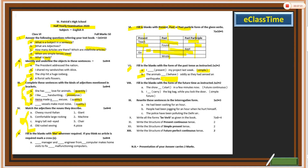Number eight: fill in the blank with the form of future tense as instructed. Number A: 'The show dash start in a few minutes' — the instruction is future continuous. Number B: 'I dash carry a big bag while you lock the door' — the instruction is future simple. Fill in each blank in the required future tense form. These sentences are also from the book.